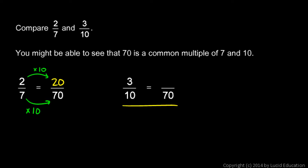Now over here, the 3-tenths is equal to how many 70ths? Well, 10, to get our denominator from 10 to 70, what do we do?